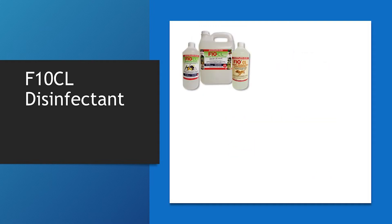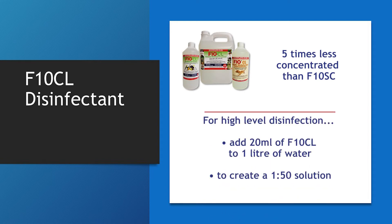The F10CL is five times less concentrated than F10SC. This means that to make one litre of solution for high-level disinfection, you should add twenty millilitres of CL to your one litre of water.